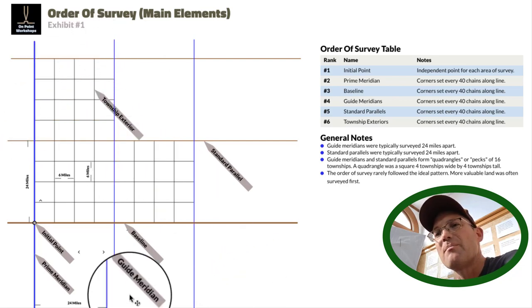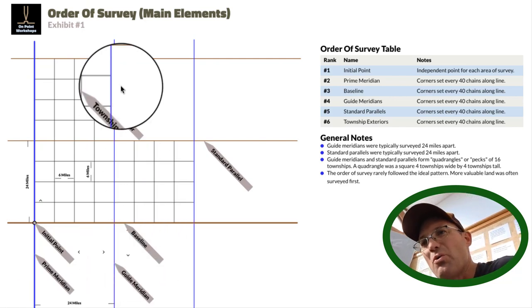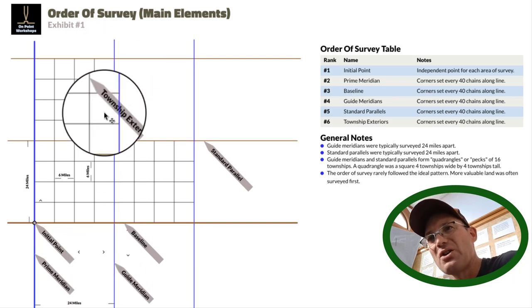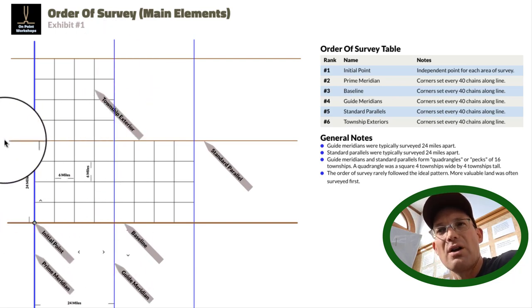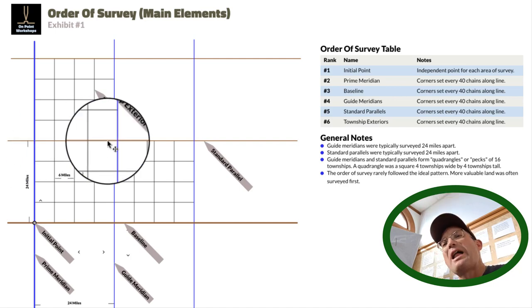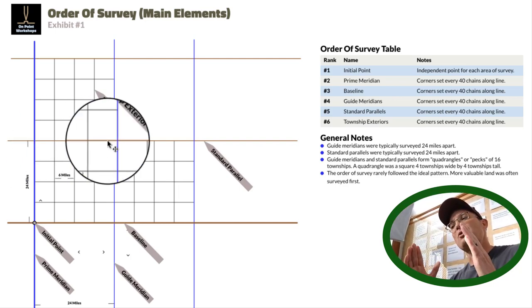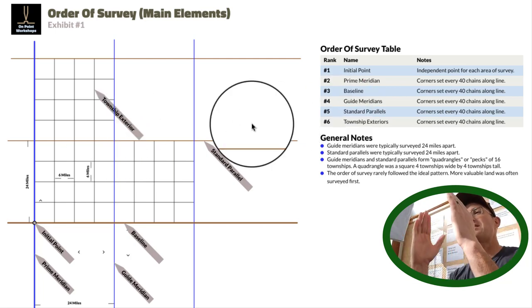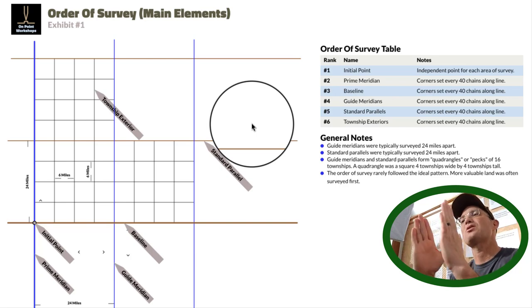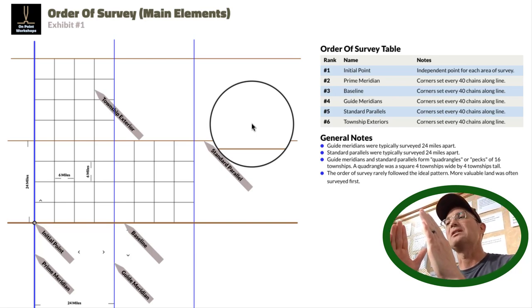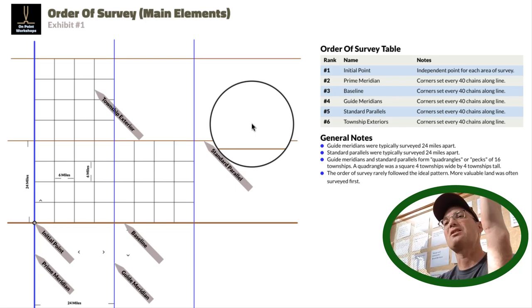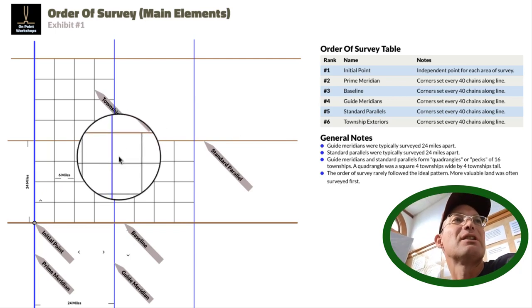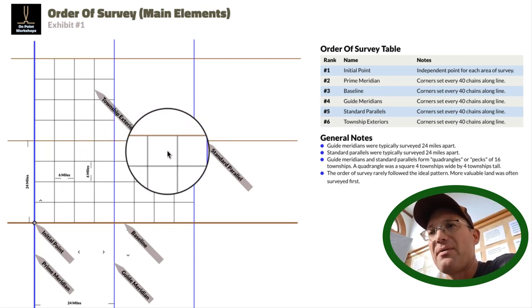The prime meridian and the guide meridians were almost always run astronomic north-south, and that did not change. The standard parallels were run astronomic east-west. But as you move north, your guide meridians converge, and so every 24 miles when you got to a standard parallel, they would reset. When you're moving north to the standard parallel, your width is actually less than the full 24 miles, so they reset to 24 miles at the standard parallel. That's how we get closing corners, which we won't talk about in this video.